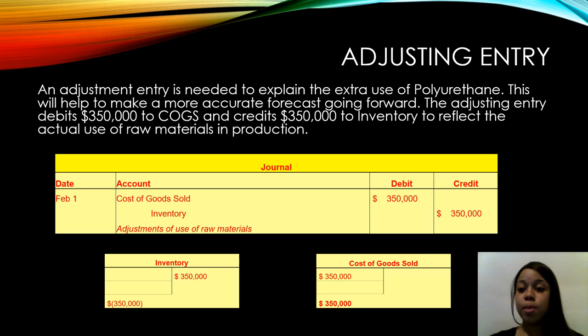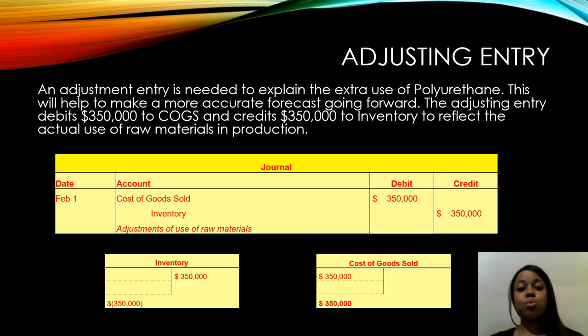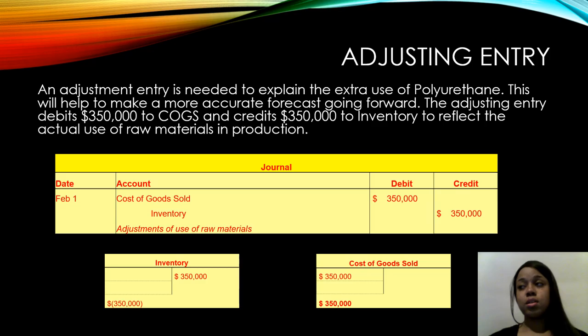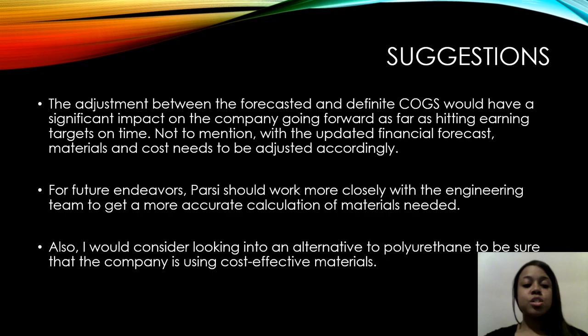An adjusting entry is needed to explain the extra use of polyurethane. This will help to make a more accurate forecast going forward. The adjusting entry debits three hundred and fifty thousand dollars to cost of goods sold and three hundred and fifty thousand dollars to inventory to reflect the actual use of raw materials in production. Below, you will again see the adjusting entry in journal and T-account format, and they also align.